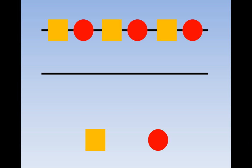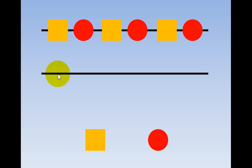Let's copy this pattern. All we need to do is choose an orange square or a red circle. See if you can complete the pattern below. What comes next — orange square or red circle?